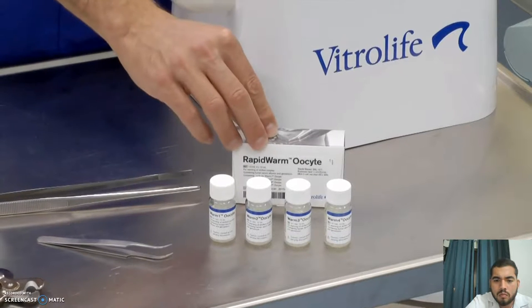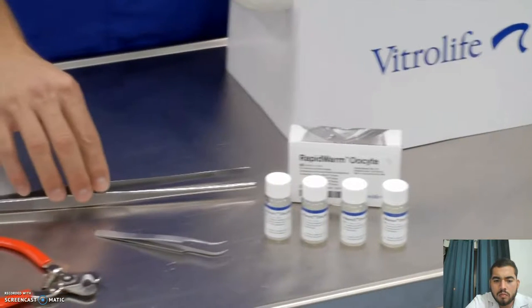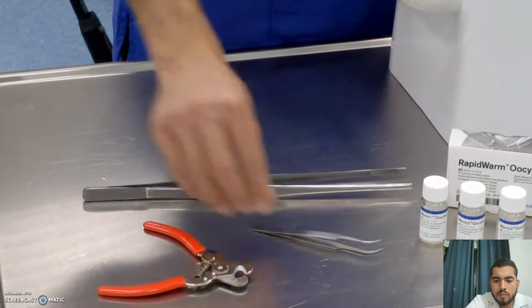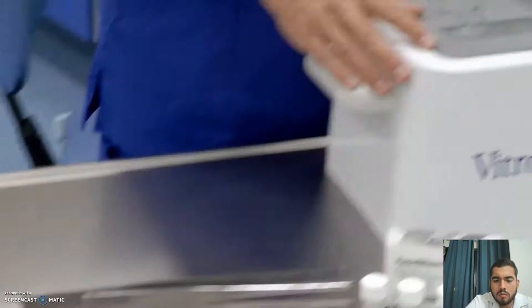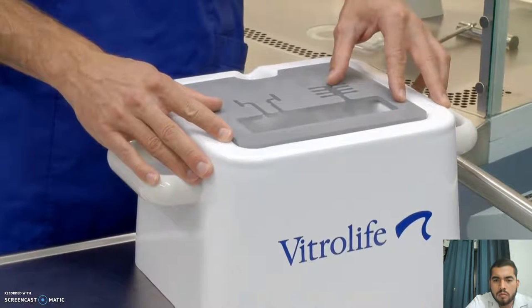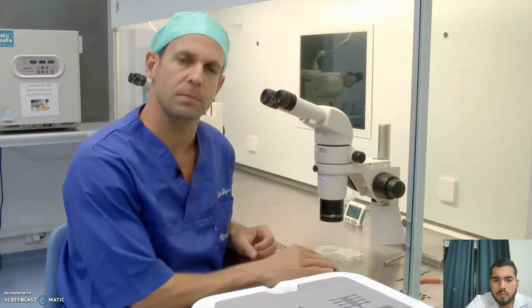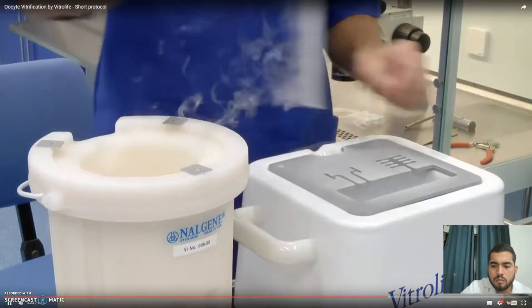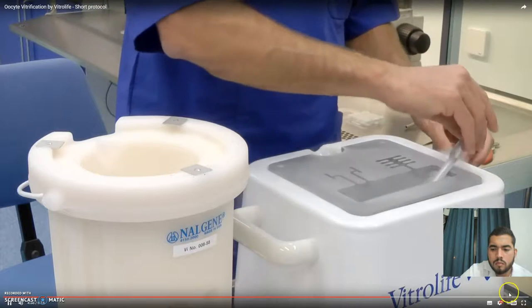To warm the oocytes we need the following: the rapid warm kit containing four solutions, the large forceps to hold onto the straw, the needle nose tweezer to pick the rapid eye out, the cutter to open the straw, and the smart box containing liquid nitrogen. The warming procedure is performed at 37 degrees Celsius and ambient atmosphere. Use one milliliter of each of the warming solutions to prepare your dish. Once you've identified and located the correct patient's oocytes, place the whole cane inside the smart box inside the liquid nitrogen.